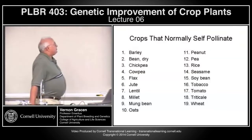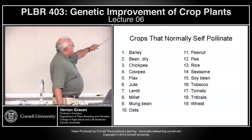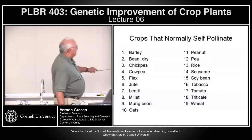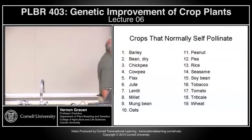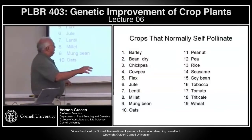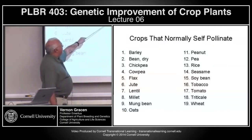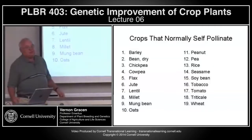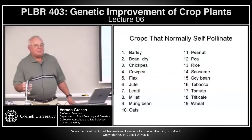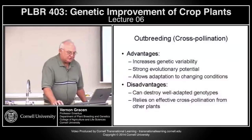Crops that normally self-pollinate include barley, beans, chickpea, cowpea, lentils, millet, oats, wheat, triticale, tomatoes, soybean, rice, peanut, and peas — a number of crops very important as food for human and animal populations.